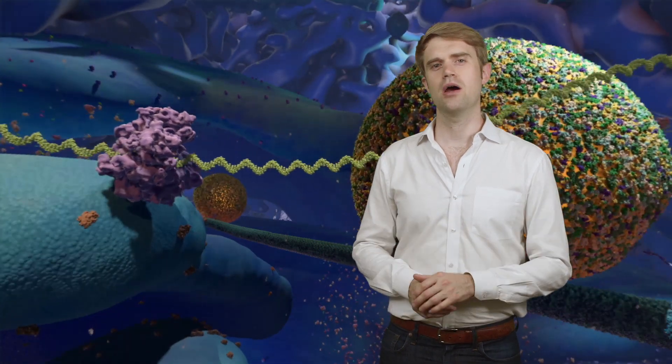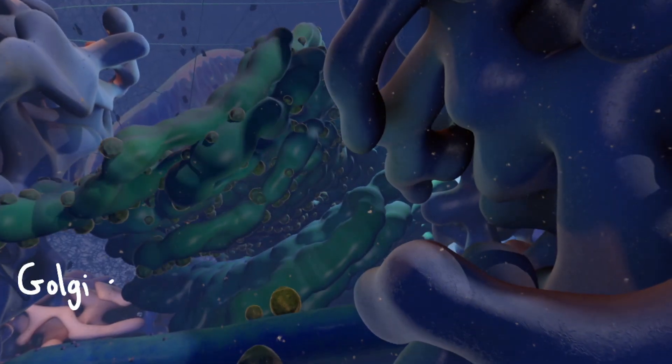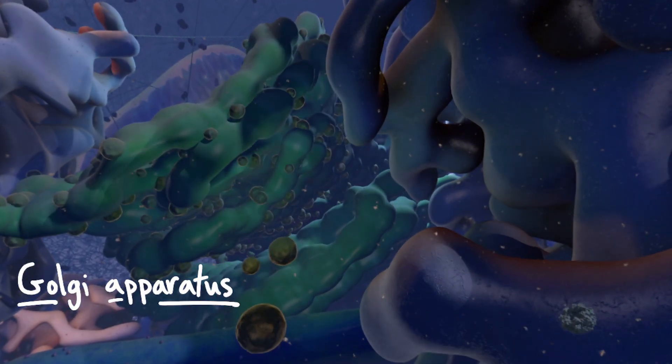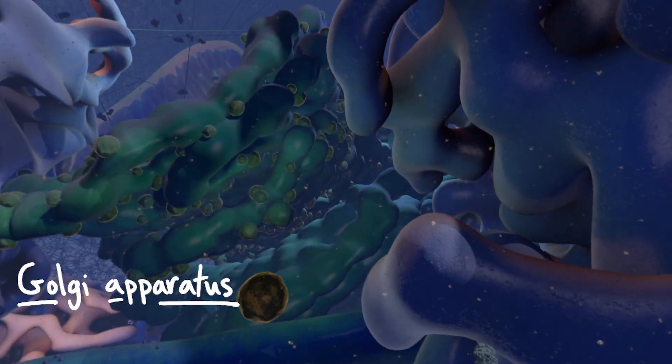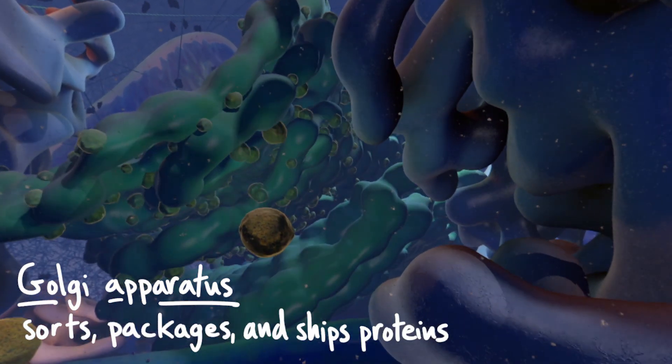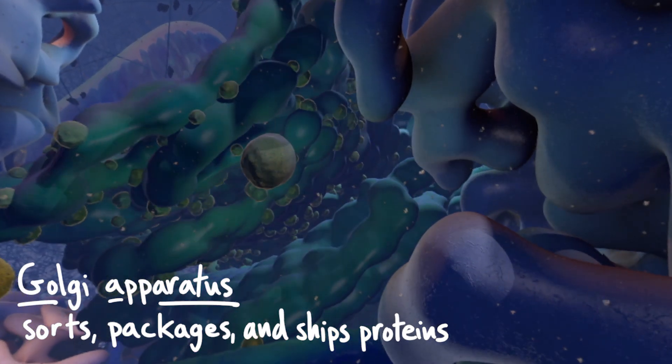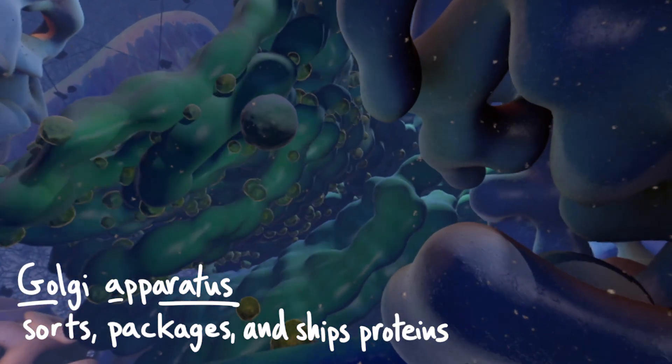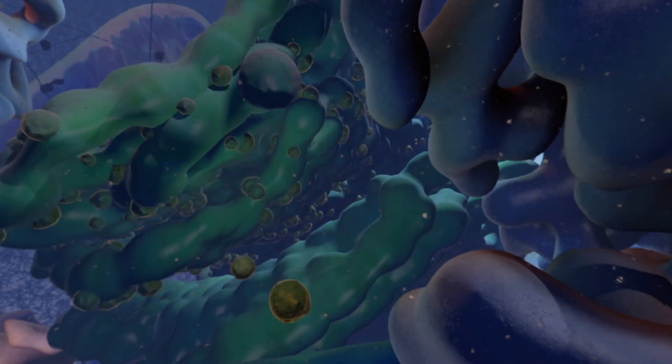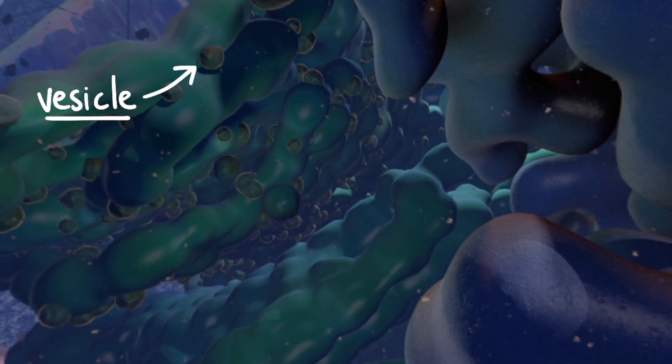After they're made, proteins move through the channels of the ER to different locations, and many of them end up in the Golgi apparatus, which is here. See how those round blobs are coming off of it? The Golgi is like the post office of the cell. It receives proteins from the ER, sorts them, packages them up, and ships them off to their proper destinations. Proteins get packaged up inside those round blobs, which are called vesicles.